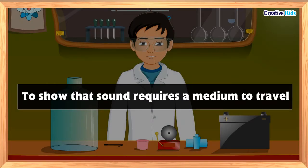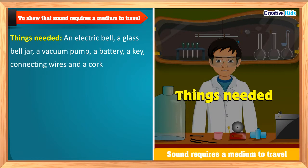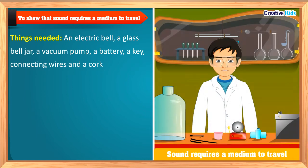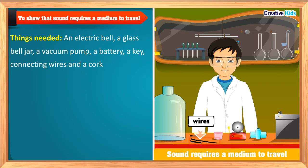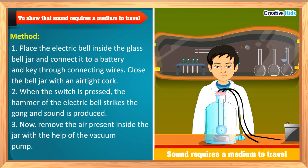Let us first see whether sound can travel in vacuum or requires a medium to travel. To understand this, let's do an activity. The aim of our activity is to show that sound requires a medium to travel. For this activity we need an electric bell, a glass bell jar, a vacuum pump, a battery, a key or switch, some connecting wires, and a cock.